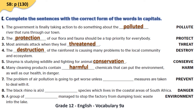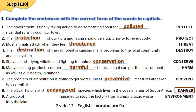Sentence seven: the problem of air pollution is going to get worse unless preventive measures are taken to deal with it — we need the adjective from prevent to describe the word measures, so the answer is preventive. Sentence eight: the black rhino is an endangered species which lives in the coastal areas of South Africa — the adjective from endanger is endangered, and the black rhino is considered one of the endangered species.